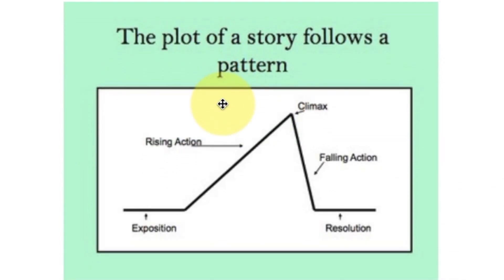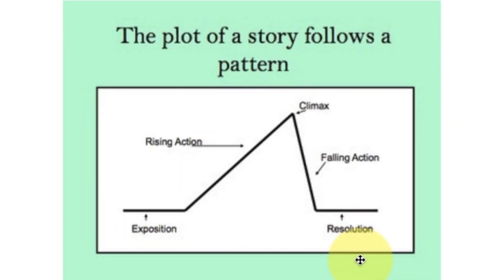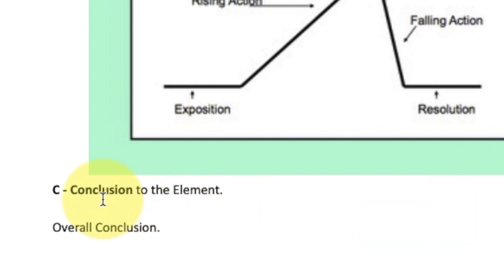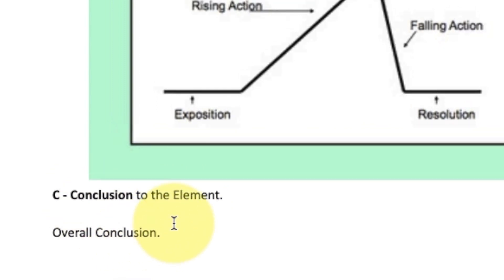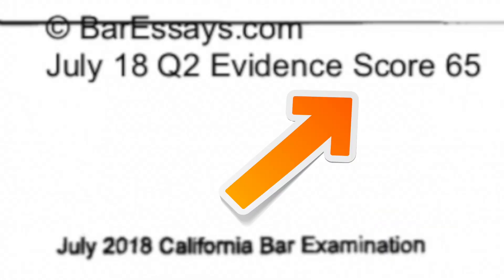Think about this like the elements to a plot: you have the exposition, the rise in action, the climax, the falling action, and the resolution. It's very standard. When you're trying to write that 65 response consistently, you want to stay basic and apply basic structures. Then of course you have the conclusion to the element and then the overall conclusion — two conclusions. Now let's look at a response that was given a score of 65.